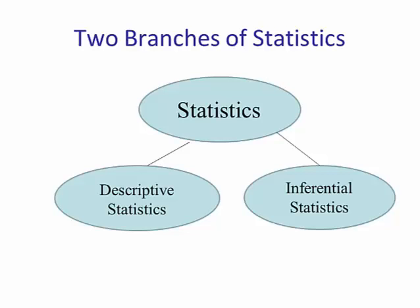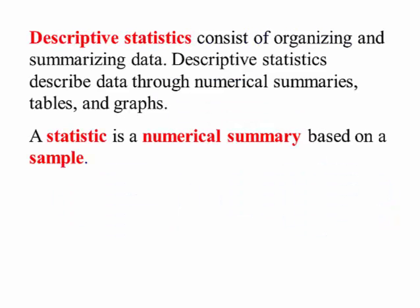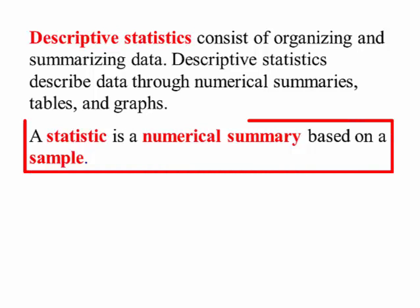There are two branches of statistics. The first is descriptive statistics, and the second is inferential statistics. Descriptive statistics, as the name implies, describes data from a sample. This is done by the use of tables, graphs, and numerical summaries. A statistic is a numerical summary based upon a sample — it is a number that is measuring something from a sample.